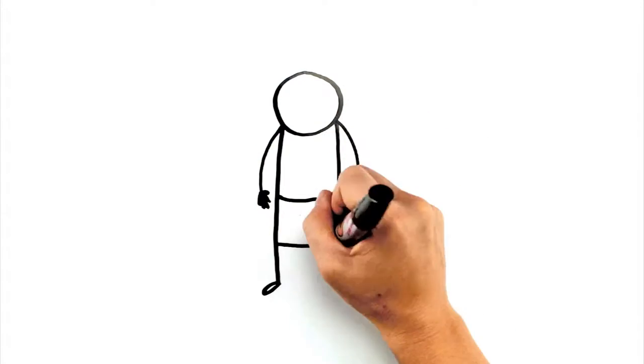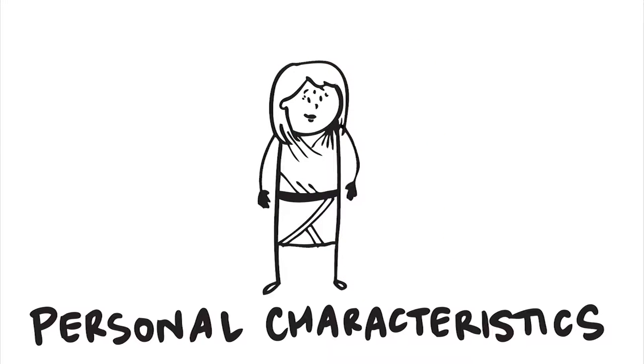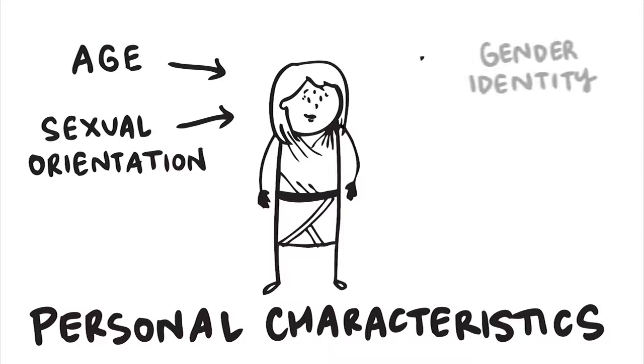Part of looking at the whole person is understanding their diversity. We are all unique, shaped by a variety of areas, personal characteristics, the things that are innate to who we are, including our age, sexual orientation, gender identity, culture, ethnicity and many more.